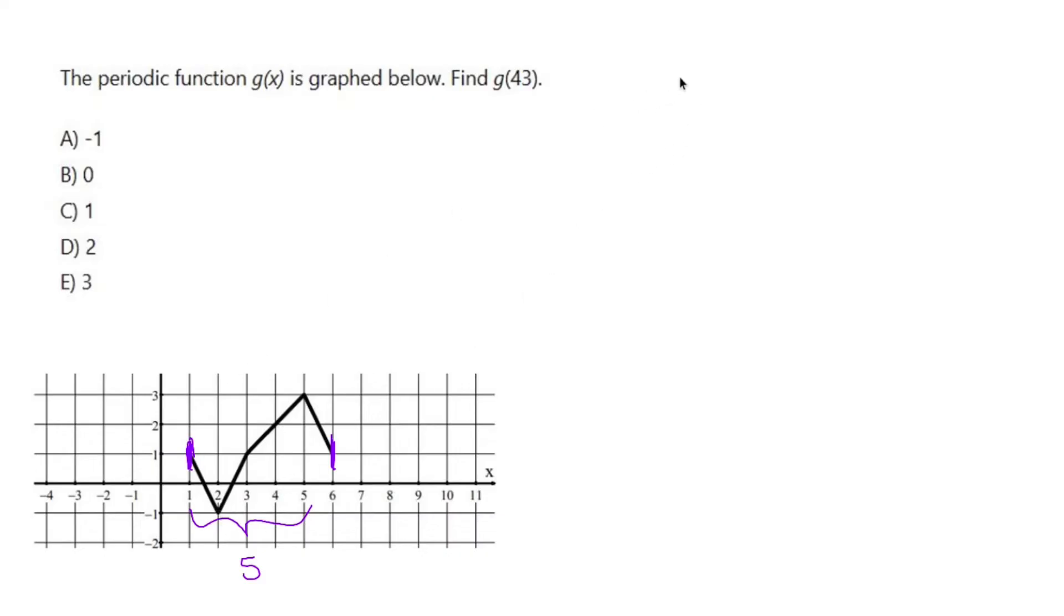If this repeats every 5, then 43 divided by 5, the remainder of that is going to give us our behavior.